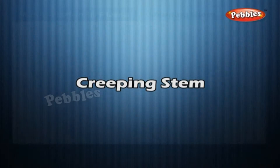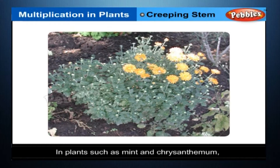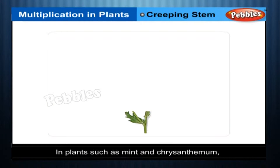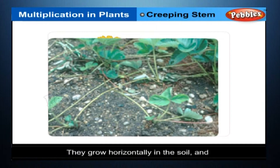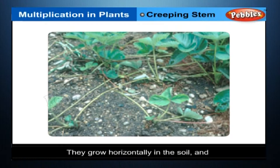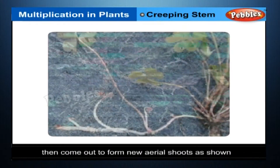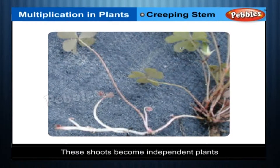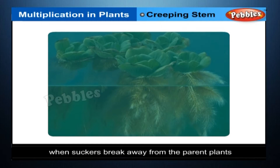Creeping stem sucker: in plants such as mint and chrysanthemum, horizontal stems arise from the base of the erect shoot, growing horizontally in the soil and then coming out to form new aerial shoots. These shoots become independent plants when suckers break away from the parent plants.